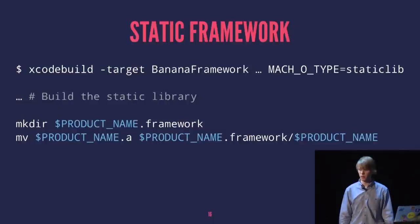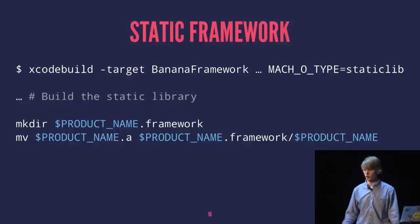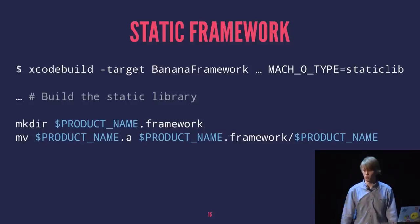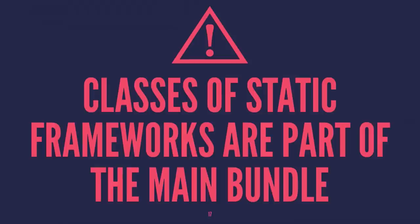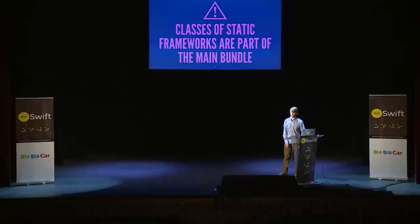Building a static framework is not so different from building a static library or a dynamic framework. We have a framework target product type in Xcode, but the build setting — which Xcode doesn't offer by default — requires the mach-o type to be set to static lib. A warning: static frameworks do not behave exactly the same as dynamic frameworks. Their resources do not live in a separate bundle; they live together with your application code in the main bundle.